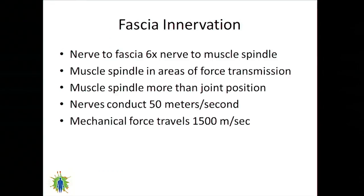Fascia innervation: if you look at the analysis of nerves, there are about six times as many nerves to the fascia as to the muscle spindle. We think muscle spindles are important for controlling movement, but there are far more nerves going to fascia — making the fascia a true sensory organ. Nerves conduct at most 50 meters per second, but when you mechanically push on fascia, that mechanical signal is sound — a sound wave traveling at 1,500 meters per second. So information can move very quickly mechanically in fascia.